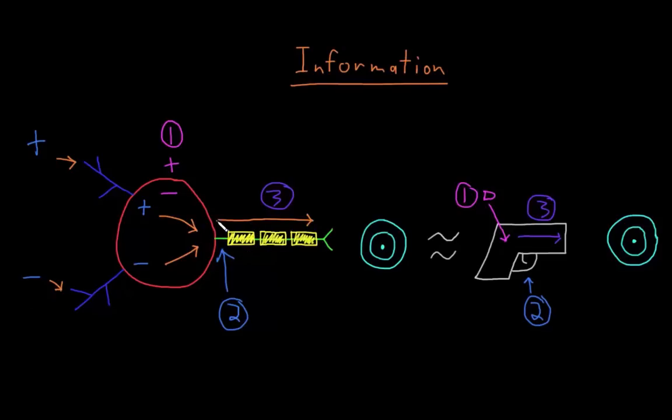When an action potential reaches the axon terminals at the end of the axon, information will then cross usually a small gap to the target cell of the neuron. The way this happens for most synapses, where an axon terminal makes contact with a target cell, is by release of molecules called neurotransmitters that bind to receptors on the target cell, and which may change its behavior. Neurotransmitters then remove from the synapse, so it's reset to transmit more information. I think of this part as similar to the bullet leaving the gun to hit the target.